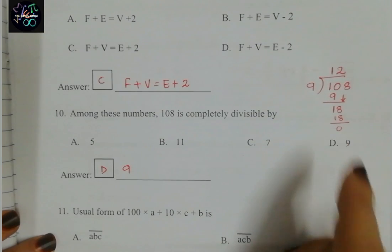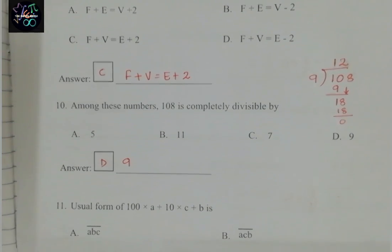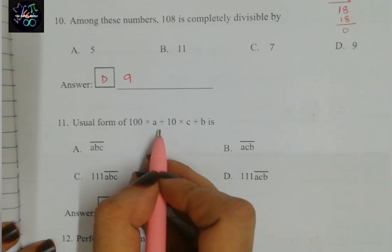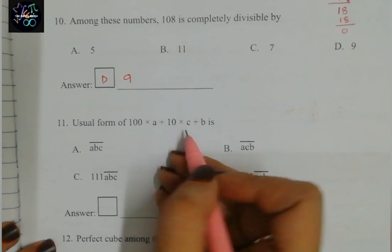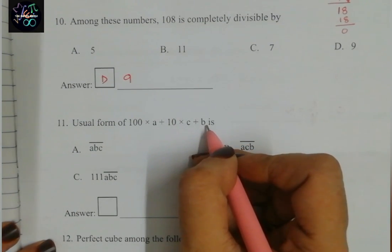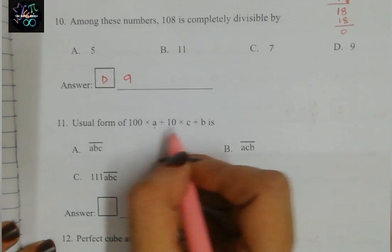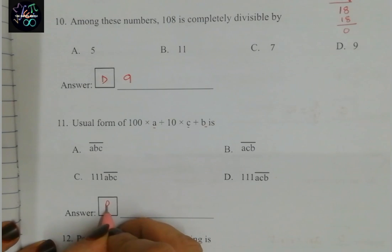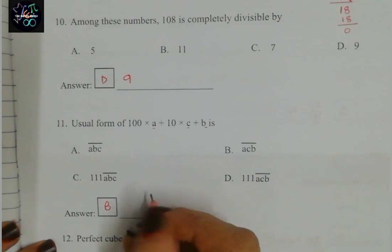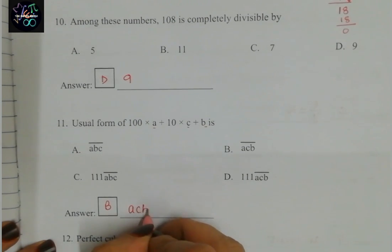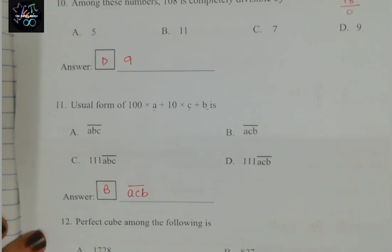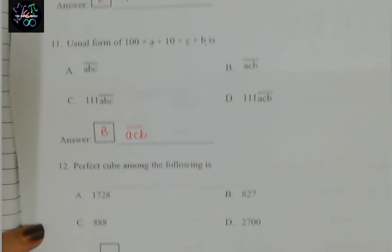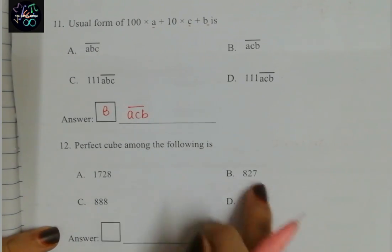Question 11: the usual form of 100 × a + 10 × c + b is ACB. So option B, ACB, is the correct answer. Question 12: find the perfect cube among the following — we need to check each option.